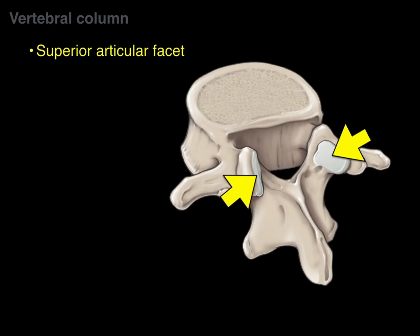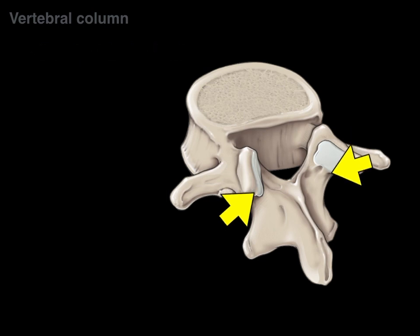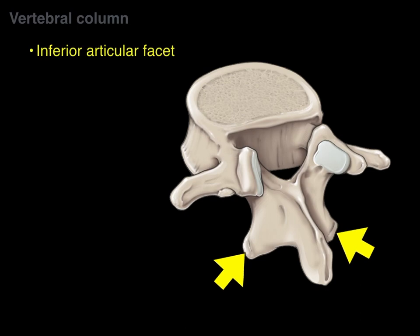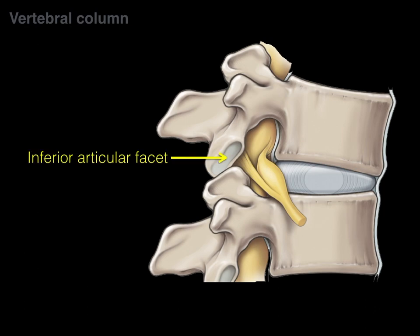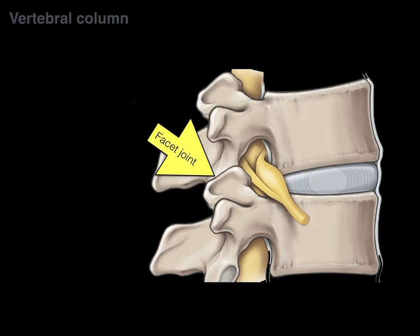In the posterolateral view, we have superior articular facets. A facet joint is a synovial joint that articulates with the superiorly adjacent vertebra. There are both superior and inferior articular facets, and together they form a facet joint — also called a zygapophyseal joint — allowing flexion and extension movement. Because it's a synovial joint, it can produce a cracking sound, like when you crack someone's back.